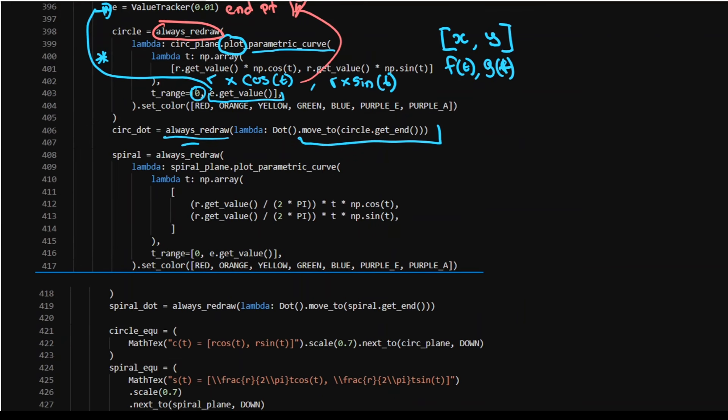Very similar thing for my spiral, right? Always redraw. Again, it's plotting the parametric curve. In this scenario here, it's gonna be R divided by two pi times by my function, which is T cos of T. That's gonna give me my X.